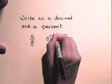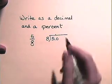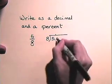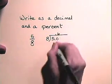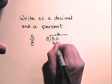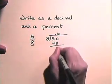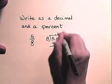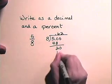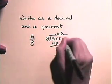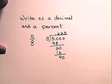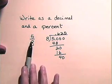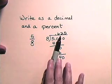Add a decimal and bring it up. Add a zero and we divide: six times eight is forty-eight. Add a zero; two times eight is sixteen. Subtract, and we get five-eighths equals 0.625. So we've written the fraction as a decimal.